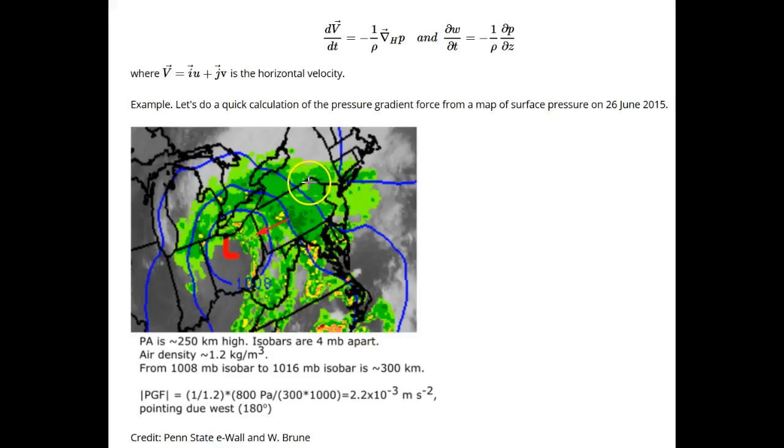This makes sense, since the pressure gradient force would move air from high pressure to low pressure, which is to the west in this case.